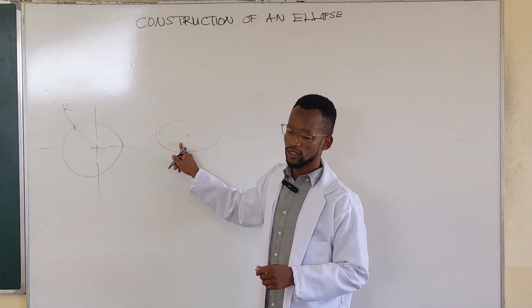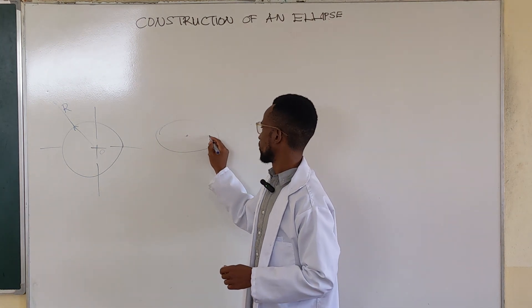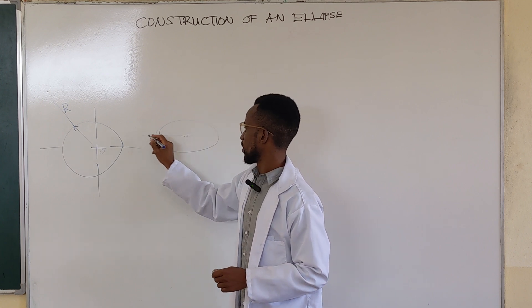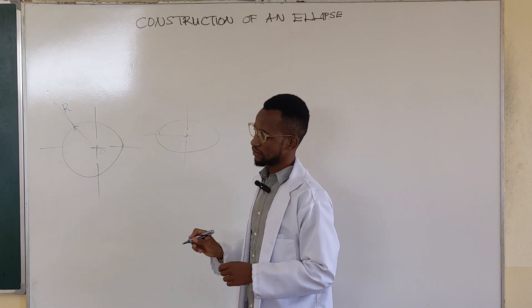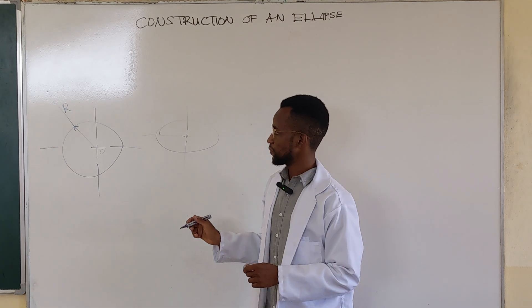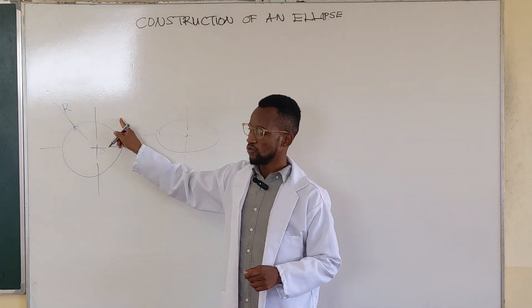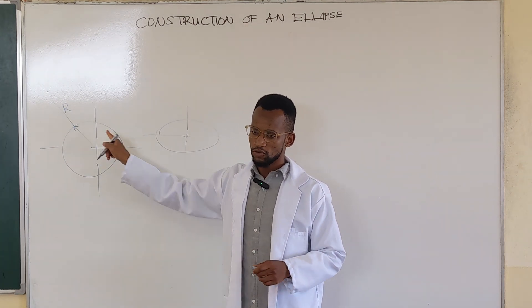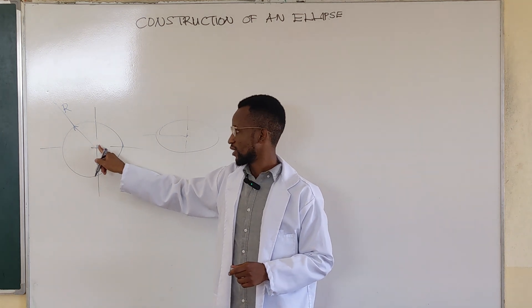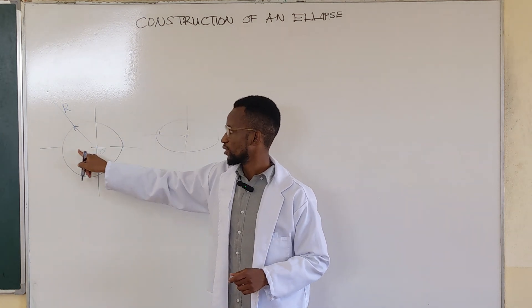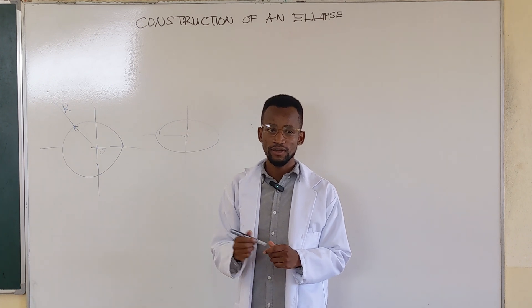We are coming from this circle and we still maintain the center. For a circle like this one here, the distance from the center to any point — whether this point, that point, or that point — is the same.